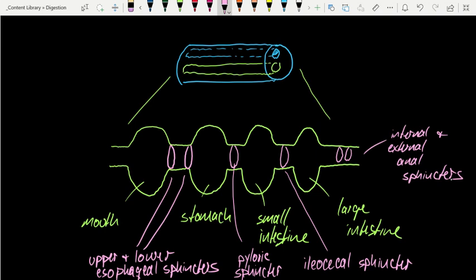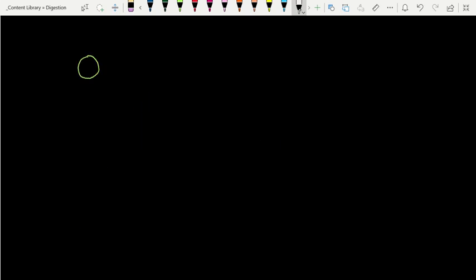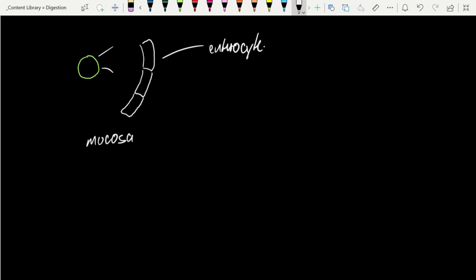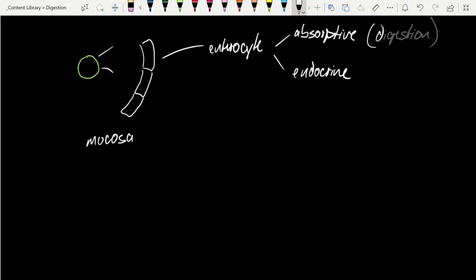Now let's pick a region along this gut tube and examine it more closely. Taking the gut tube in cross-section, the innermost layer of cells is called the mucosa. The cell type is called an enterocyte, and it can be roughly divided into two different classes: absorptive and endocrine. Absorptive is all about where digestion takes place, and endocrine is all about hormones that regulate digestion.